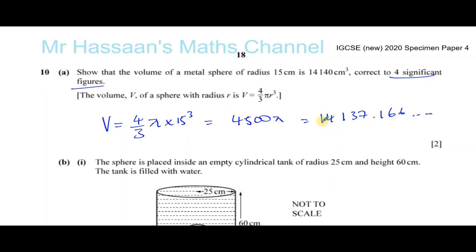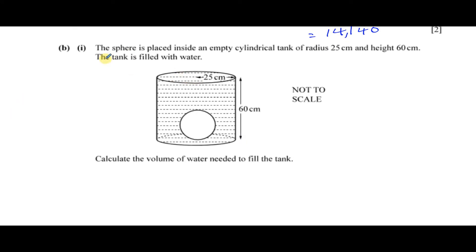Now it says round to four significant figures. The first significant figure is the first non-zero number, which is the 1 — so one, two, three, four. We round up to here: we have 1, 4, 1 and then this 3 becomes a 4. When they say correct to four significant figures, they're basically telling you to round to the nearest 10, which gives you 14,140.